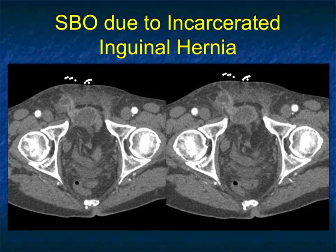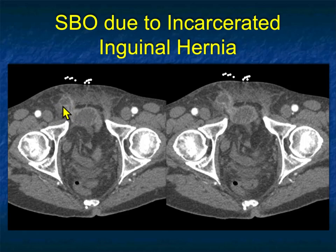Looking at the axials, just a beautiful example of how the bowel loop is enhancing — so it's inflamed — with fluid around it going right into this hernia sac. A very nice example right there.